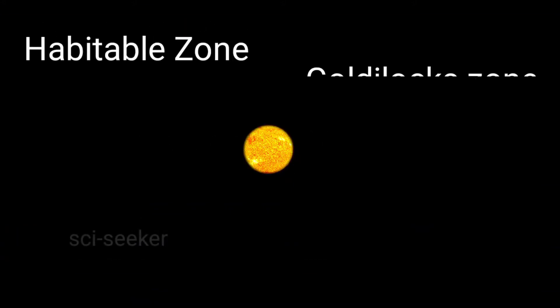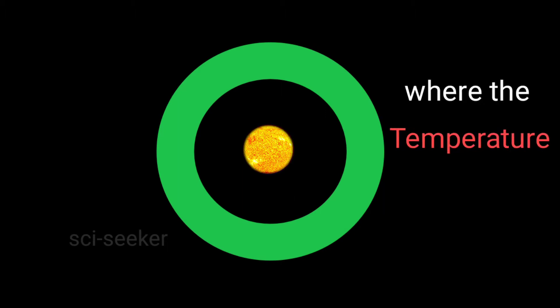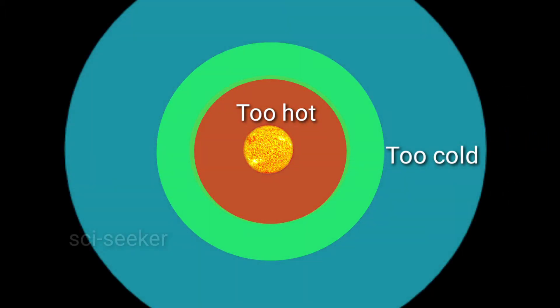The Habitable Zone or Goldilocks Zone refers to the space around a star where the temperature is just right, not too hot and not too cold, for liquid water to exist on a planet which orbits that star.